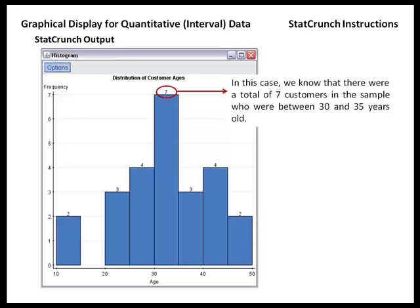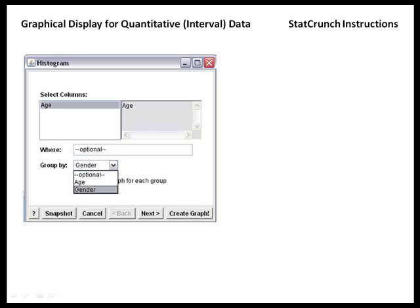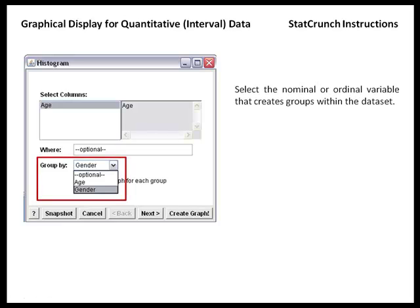Now one might want to consider what effect the gender of the customer had on the distribution of the ages. If you go back to the first shot where we were going to create a histogram, you'll notice that you have the Group By option. In this case, we could create histograms for each of our two genders.